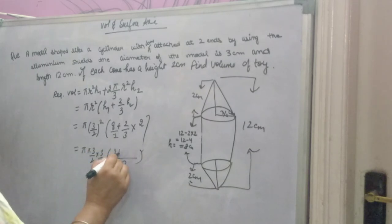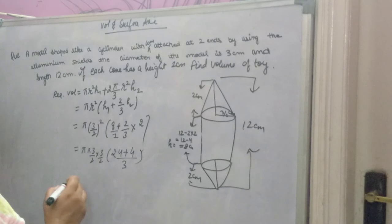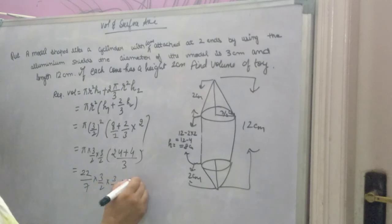You will get 24 plus 2 into 2, which is 4. So, pi value 22 over 7, into 3 by 2 into 3 by 2. 24 plus 4 is 28 over 3.